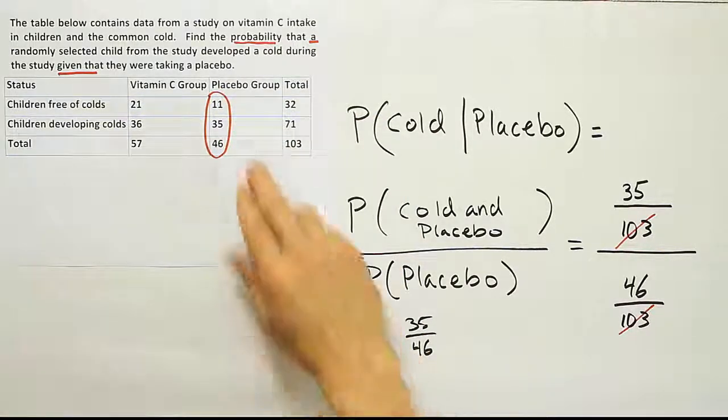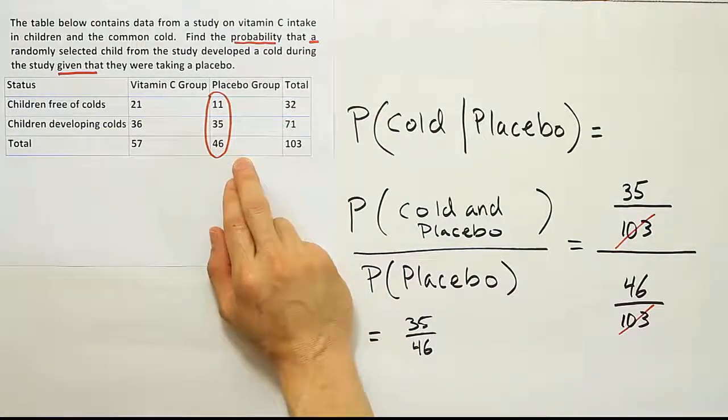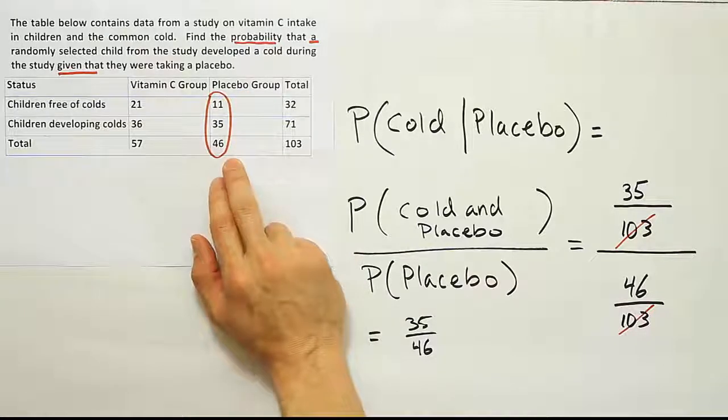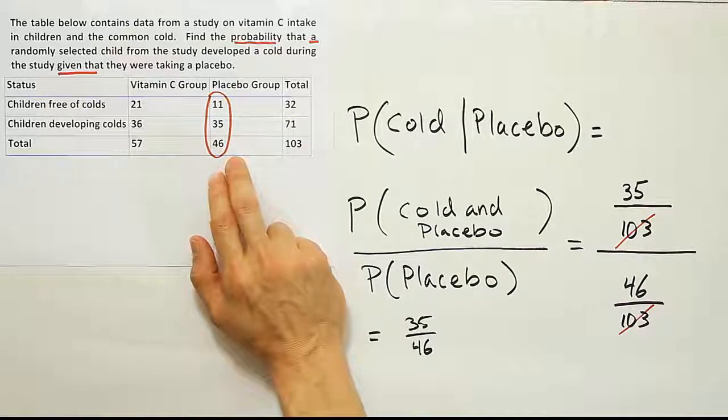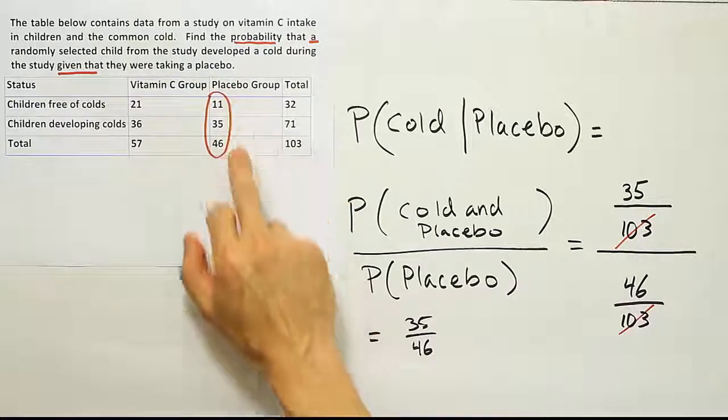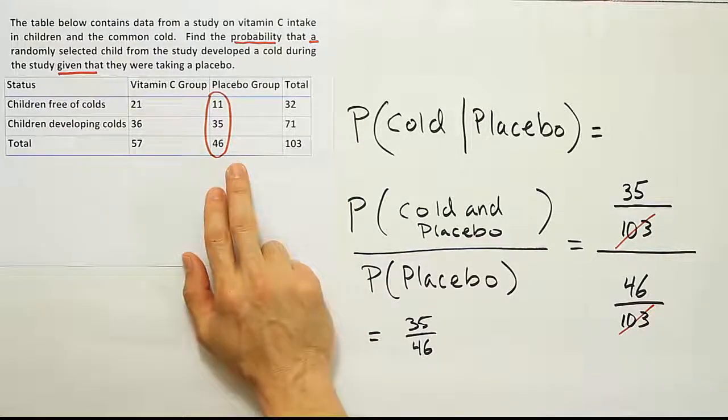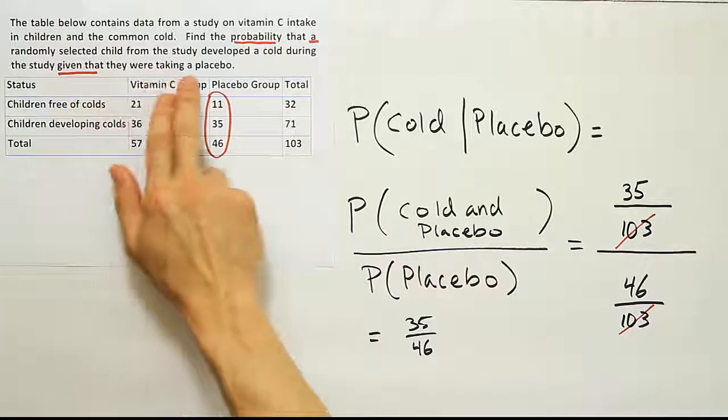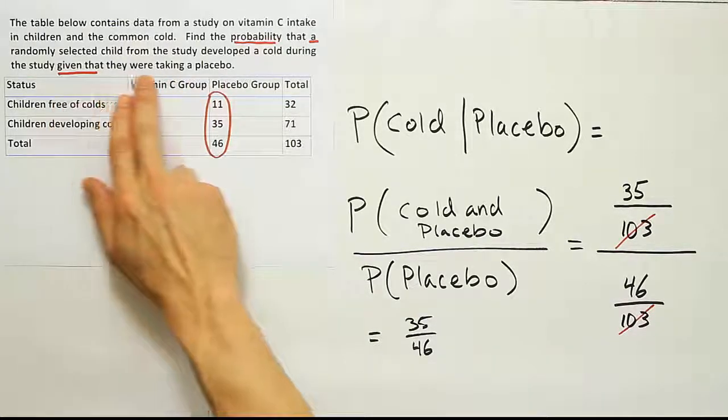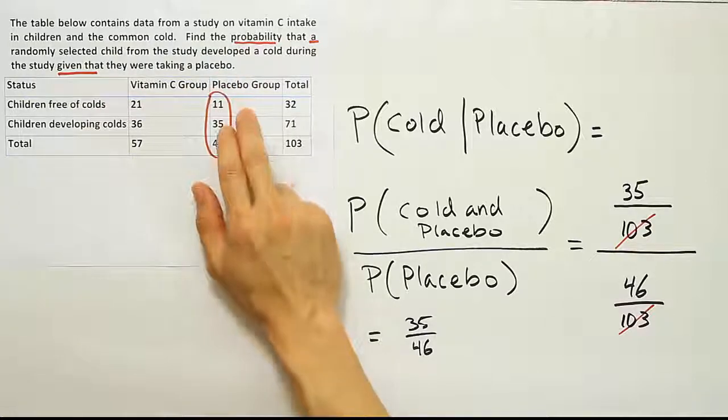Those numbers are the only numbers we need to use to solve the problem. If you take any number outside of this list here, you're probably not doing the problem right. Because you actually only need these numbers, not all of them even, just two of these numbers to finish the problem. And that's because we're only looking at the group that took the placebo, right? Given that they were taking a placebo. So we're only interested in the placebo group.